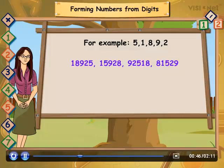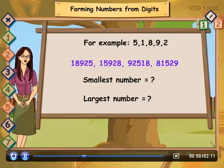Let us make smallest and largest number from the given digits. So, for smallest number, we write the digits in ascending order. Like this.